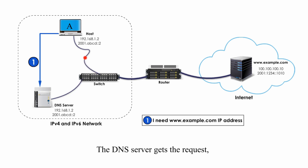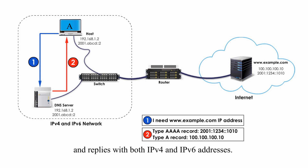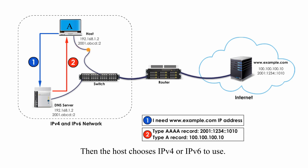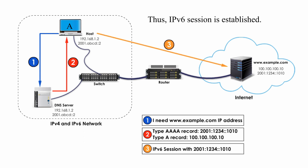The DNS server gets the request and replies with both IPv4 and IPv6 addresses. The AAAA record is the IPv6 address, and the A record is the IPv4 address — this is the second step. Then the host chooses IPv4 or IPv6 to use. In most cases, IPv6 is chosen by default, and an IPv6 session is established — this is the last step.